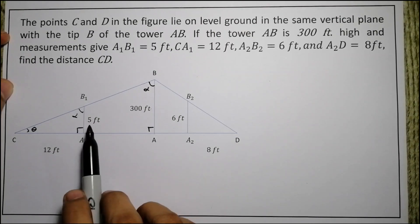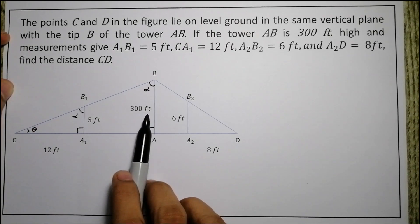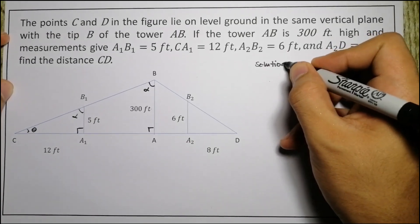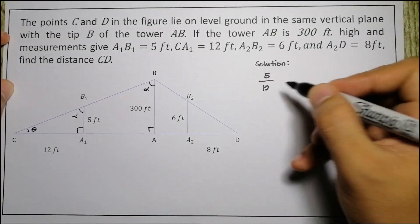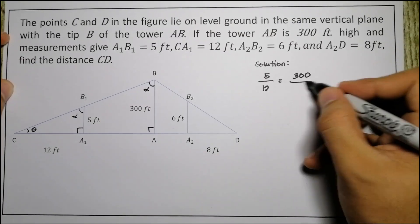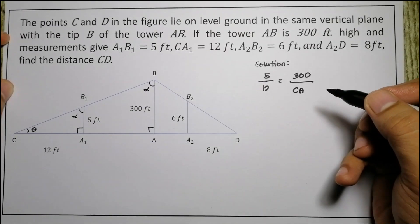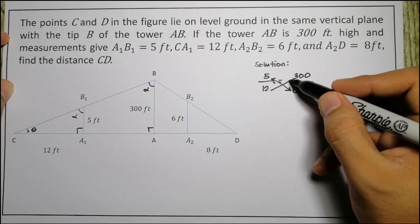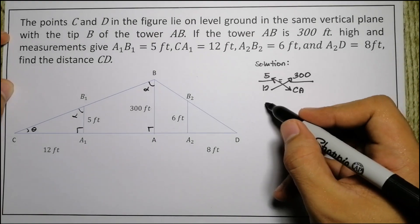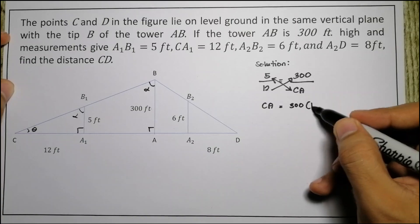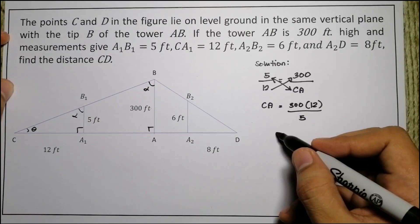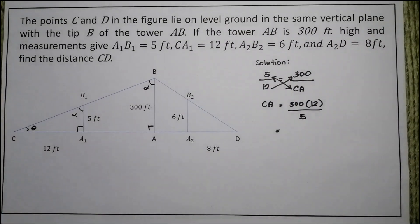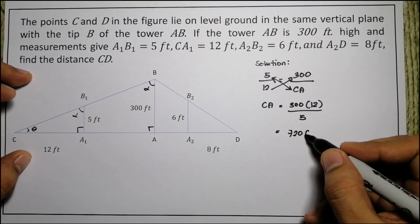So to solve this problem, we apply similar triangles that 5 over 12 is just equal to 300 over the side CA. So if we write that in solution, we have 5/12 is equal to 300/CA. So we cross multiply, CA goes to the top, the 5 goes to the top, and then the 12 we multiply to the 300. So CA is equal to 300 times 12 divided by 5, which gives us the value of CA equal to 720 feet.